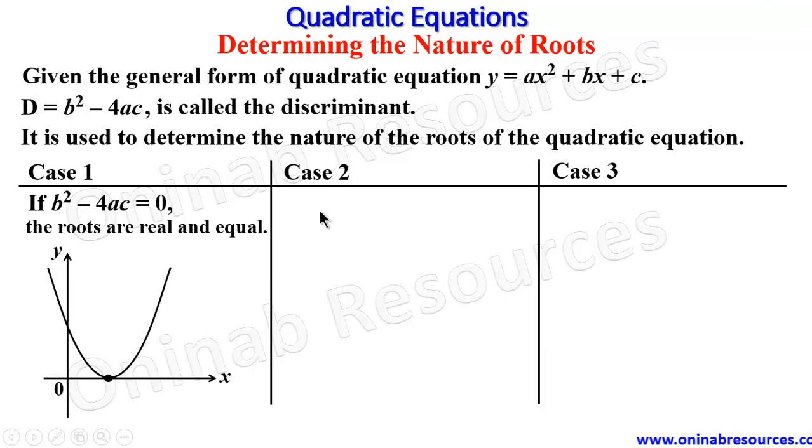Now case 2. For case 2, if b² - 4ac > 0, the roots are real and distinct. It means we have two different real values.